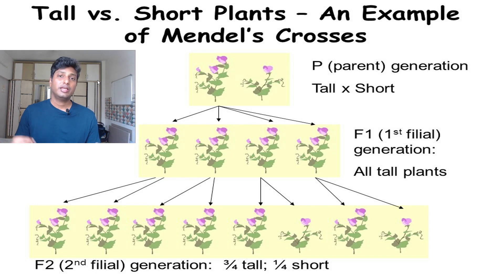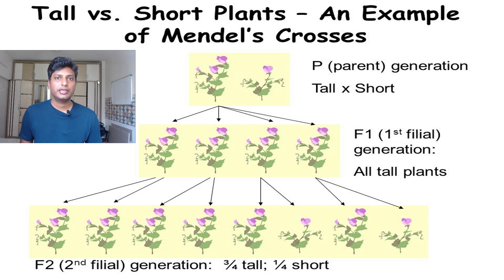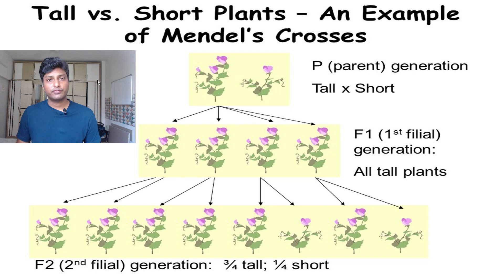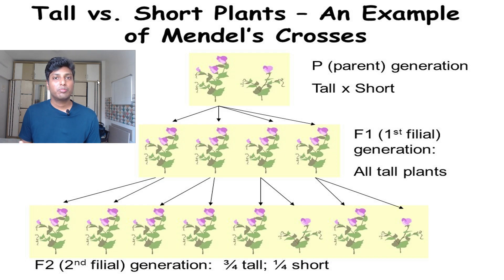He allowed the F1 plants to undergo self-pollination. In the F2 generation, he was very surprised to see that 75% of the plants were tall and 25% were dwarf. In terms of ratio, out of four plants three were tall and one was dwarf — a ratio of 3:1. This is the monohybrid ratio, also famously called the phenotypic ratio.